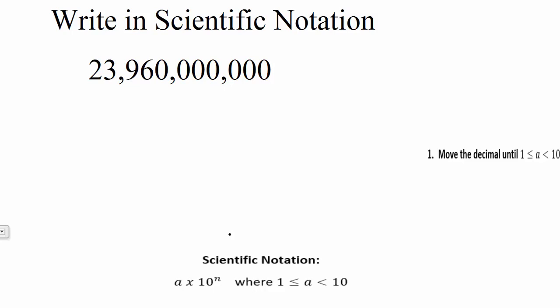So we know that our decimal point is understood to be over here all the way to the right. So we need to move our decimal until we get a number between 1 and 10. We would need to move it a few times here along the way, and we would actually want to leave it right there in between the 2 and the 3. 2.396 and so on would be a number between 1 and 10.